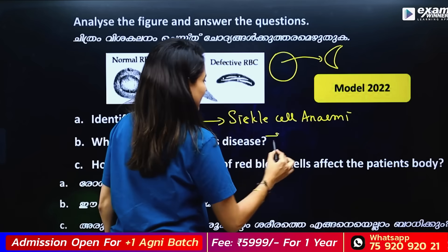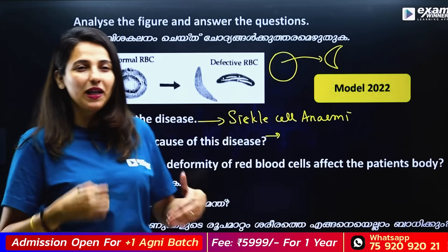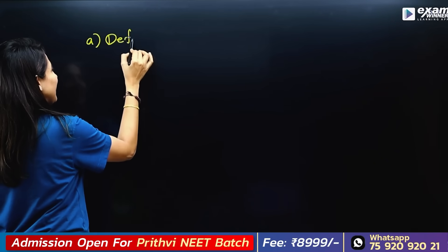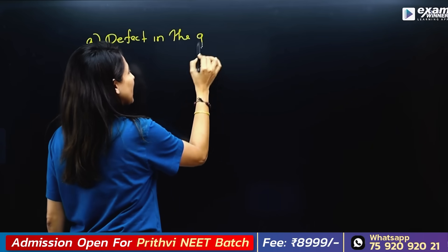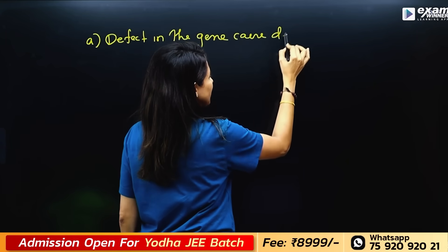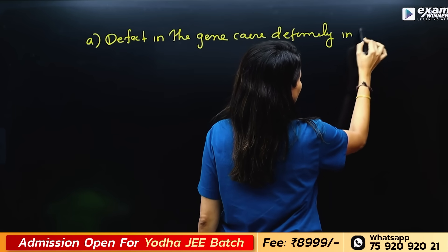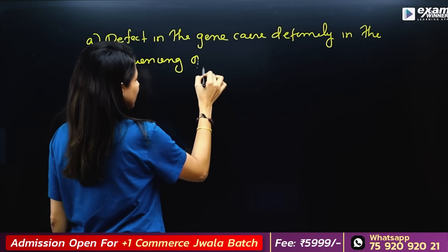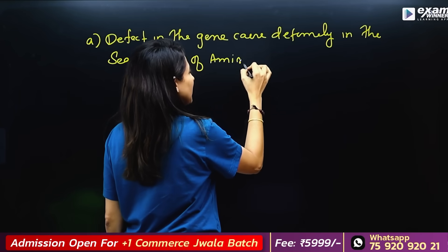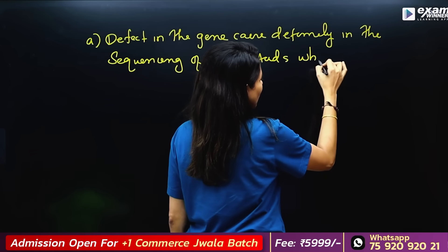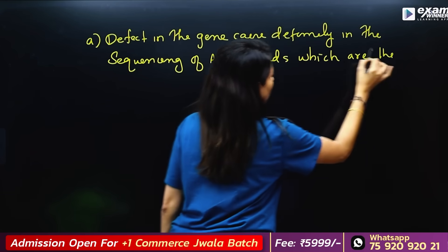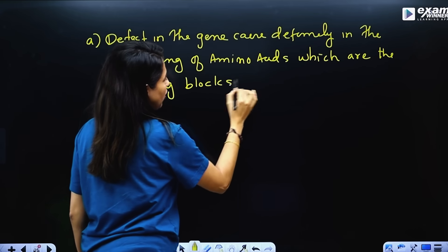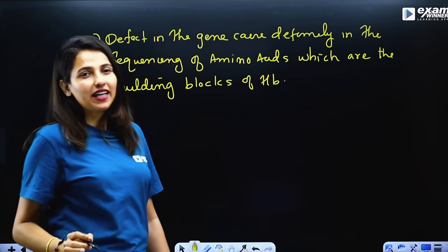What is the cause of this disease? This disease causes deformity in the sequencing of amino acids, which are the building blocks of hemoglobin.